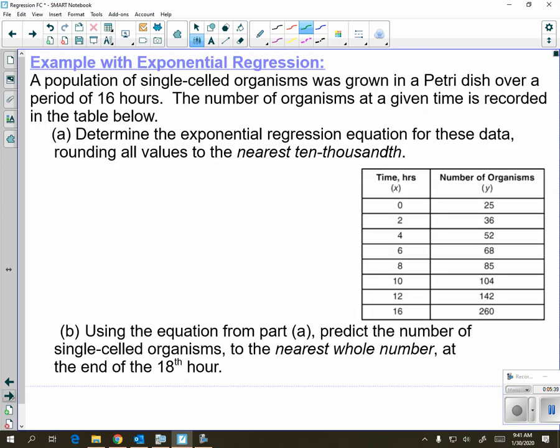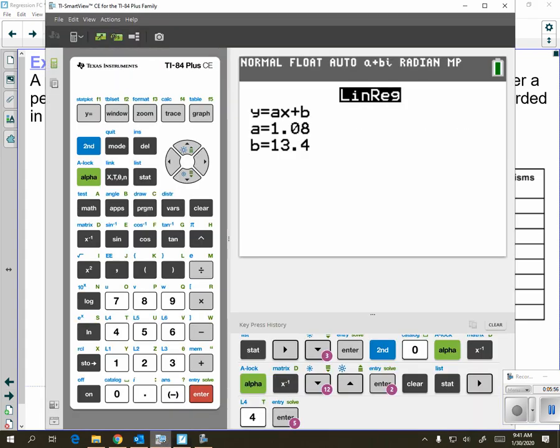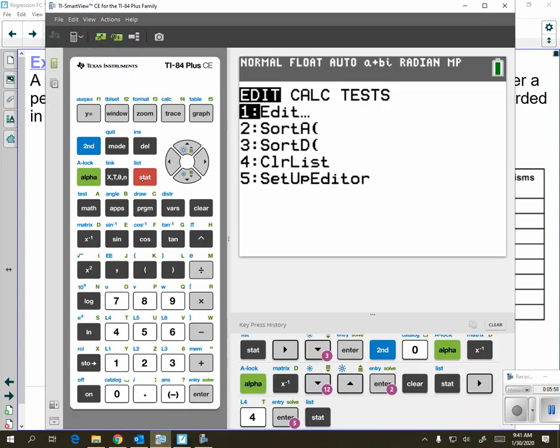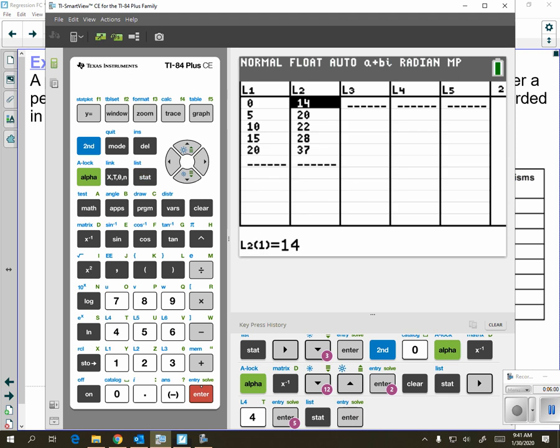Going on to the next one, if you read the problem they're talking about creating an exponential regression, and this one tells you how to round. So you're going to go back to the calculator, you're going to go to stat, and we're editing it with our new data entries. But we already have lists here.